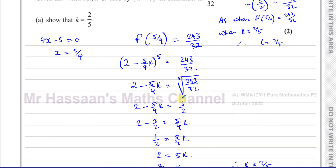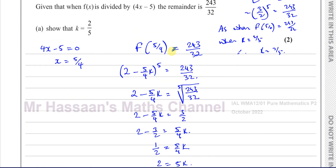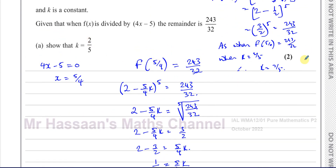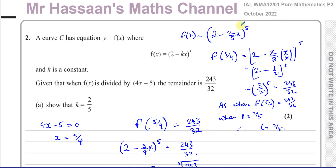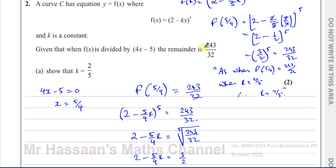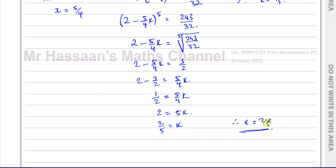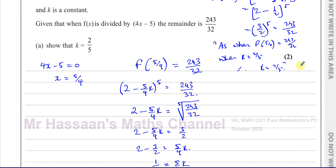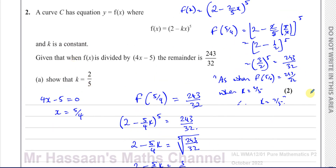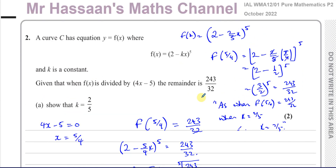You must mention some sort of statement at the end because you used what they already told you. In the first method, you don't have to make any statement, because you found k equals 2 fifths without assuming it. In the second method you used k equals 2 fifths in your steps, so a conclusion must be written. You should write some conclusion at the end — not leave it open-ended — because you actually used what they gave you. That's what's mentioned in the mark scheme.